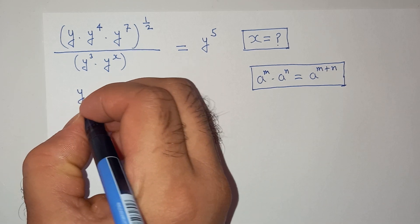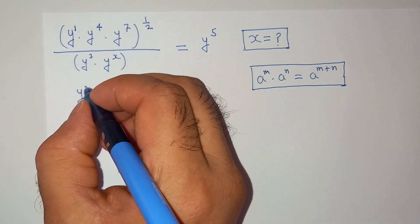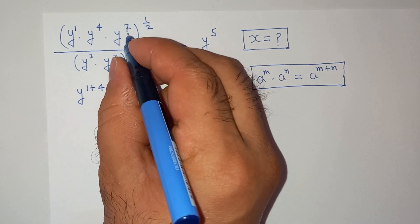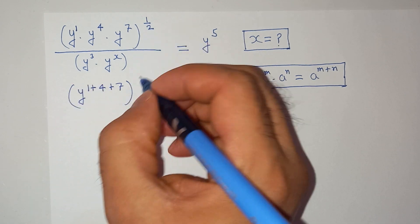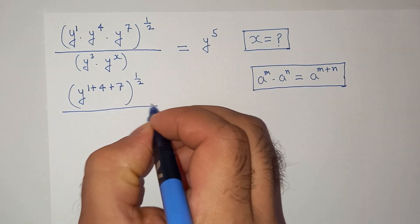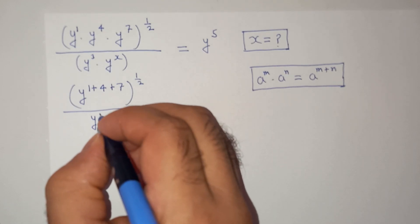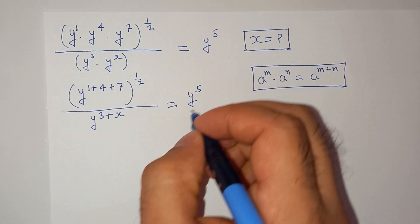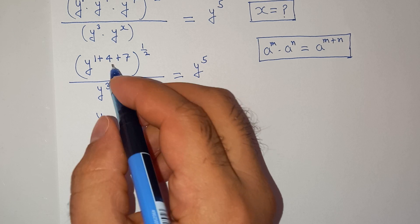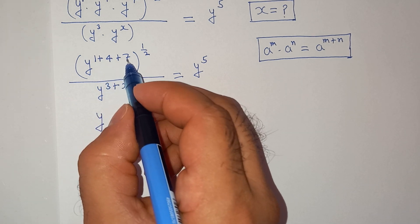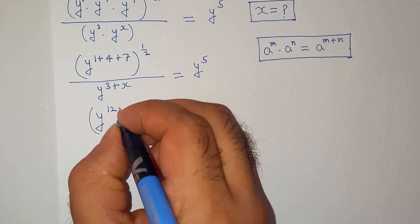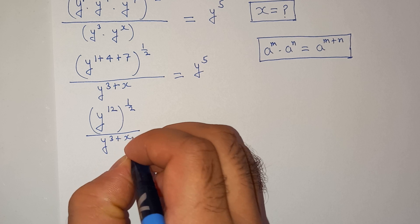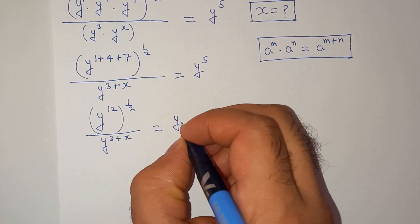So we will have y — this y is y power 1 — so we will have y power 1 plus 4 plus 7, bracket close power 1 by 2, divided by y power 3 plus x equals to y power 5. So we have 1 plus 4 is 5, 5 plus 7 is 12, giving us y power 12 power 1 by 2 divided by y power 3 plus x equals to y power 5.